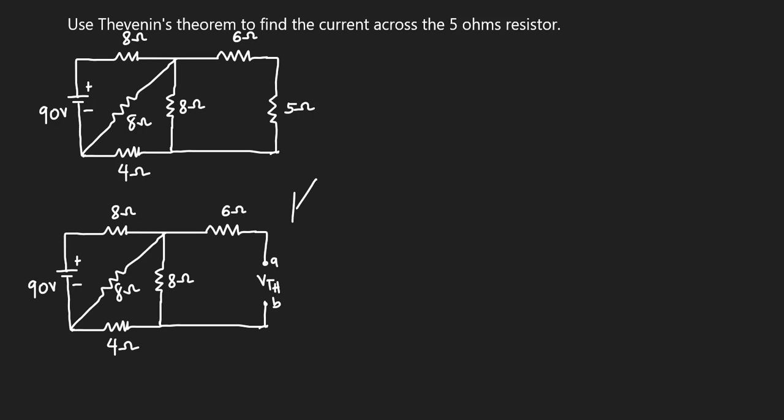I will redraw the circuit, which gives me this second circuit here. I will take out the 5 ohms resistor, then find the voltage that will be across the terminal where the resistor was — that will be our Vth.